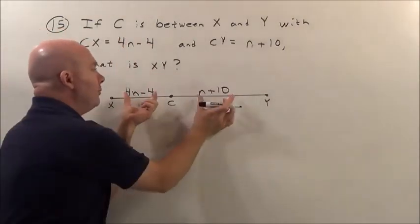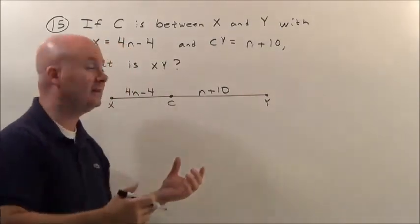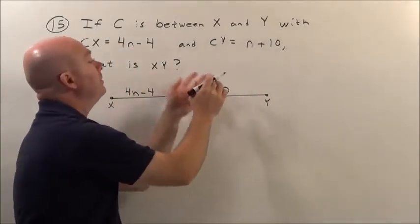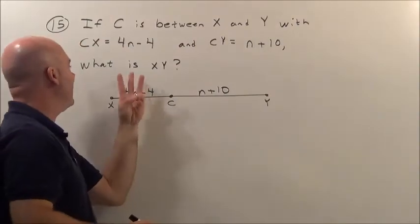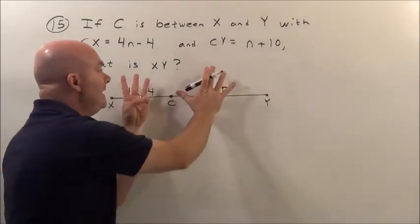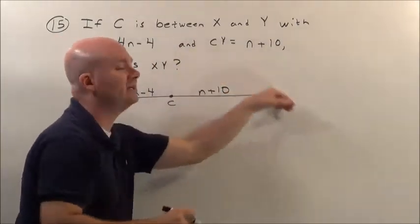Well, if this were 2 and that were 4, you'd say 2 plus 4 is 6. If this were 1 and that were 5, you'd say 1 plus 5 is 6. If we had 3 here and 10 there, you'd say 3 plus 10, the whole distance is 13.